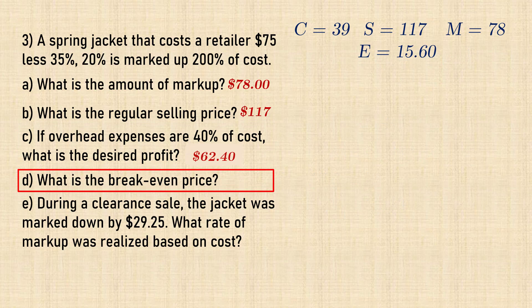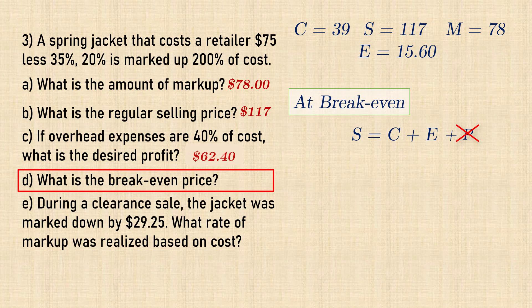In part D, we want a break-even price, the selling price at which profit equals 0. That is, selling price equals cost plus expenses, which gives $54.60.